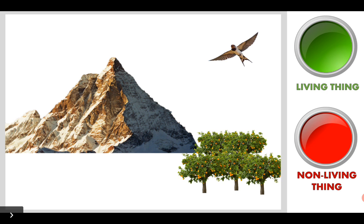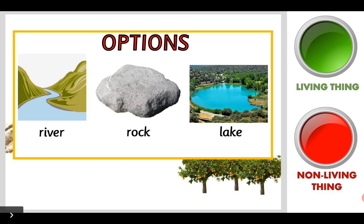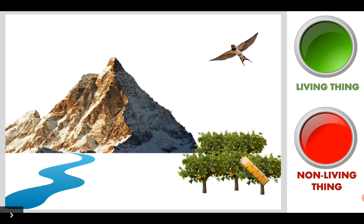Let's continue. Living thing or non-living thing? I am going to pick non-living thing. Let's see the three options: river, rock and lake. I think I prefer river. I'm going to choose river. Now we have got a river. We have got a mountain, a swallow, five trees, and a river.